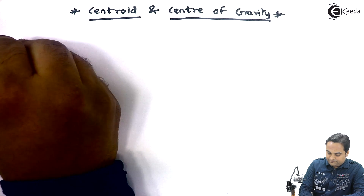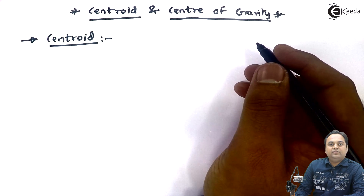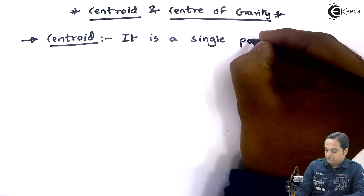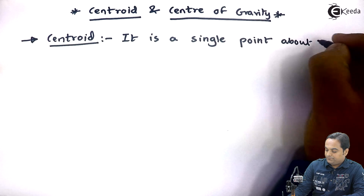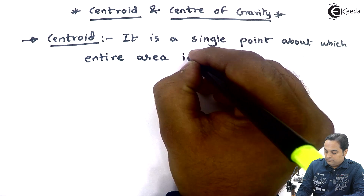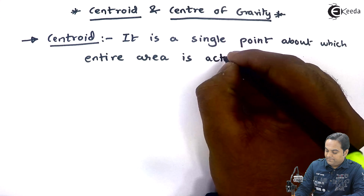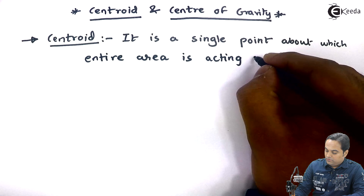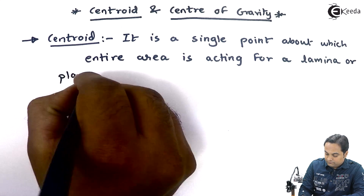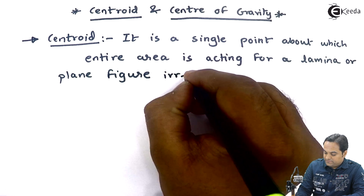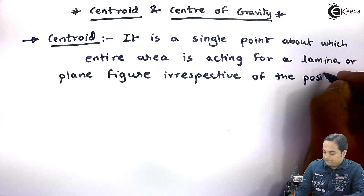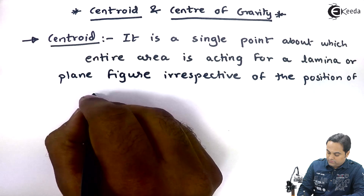Let us understand what is Centroid. Here I will be writing the definition of Centroid. Centroid is a single point about which the entire area is acting for a lamina or plane figure, irrespective of the position of the plane figure.